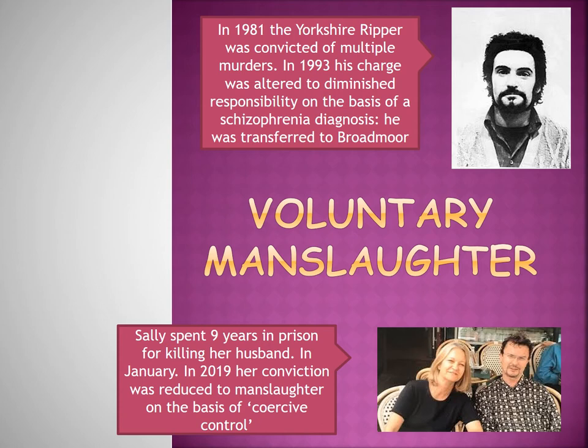The Yorkshire Ripper, Peter Sutcliffe, murdered multiple women — probably more than he was convicted of — and attempted to murder a number of women as well. He was convicted of murder, but on the basis of a medical diagnosis of schizophrenia his charge was altered to diminished responsibility, meaning his charge of murder was lessened to voluntary manslaughter. As a result, he was transferred to Broadmoor, a maximum security psychiatric hospital, to receive treatment. When he was deemed fit to no longer be treated, the court made it very clear, because of the nature and severity of his crimes, that he would have to go back to mainstream prison.